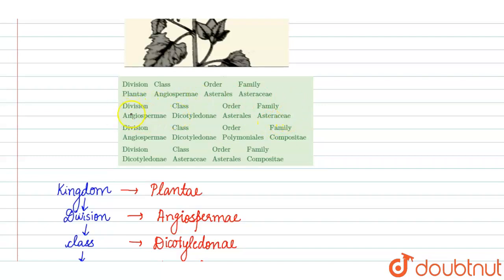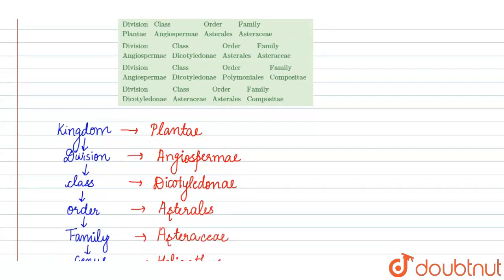You can see third option also Division is Angiospermae, Class is Dicotyledon, but the Order is Polymoniales. This is wrong, the order is wrong. And in the fourth option you can see Division is Dicotyledon, which is also wrong.